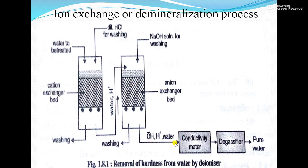Then the water will go to the conductivity meter and then to the degasifier. If any gases are present, those gases get removed. After a certain time, the cation exchanger bead as well as the anion exchanger bead get exhausted. That can be removed and regenerated by dilute HCl and dilute NaOH.